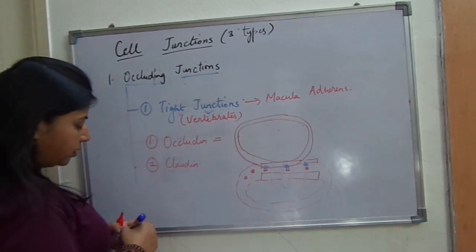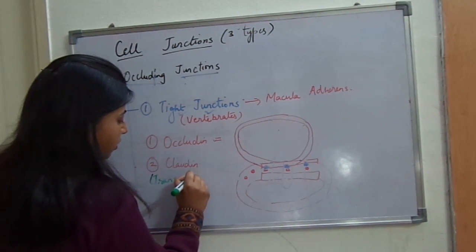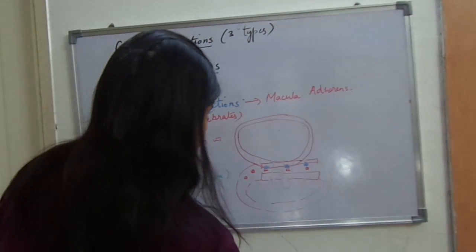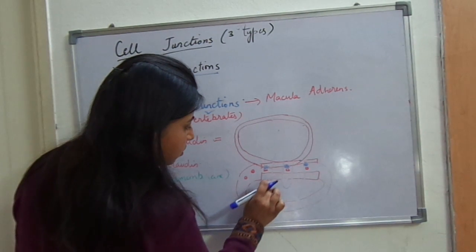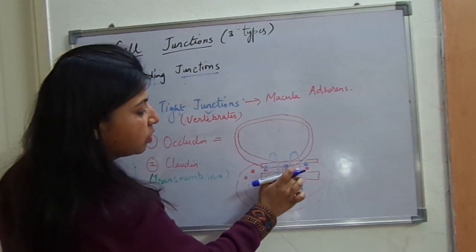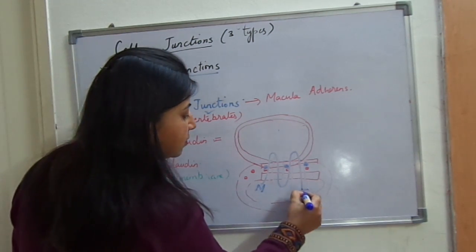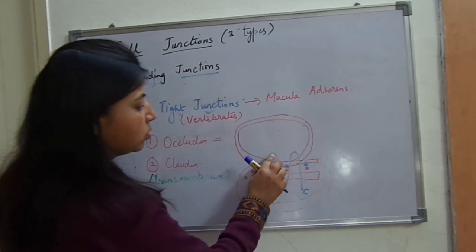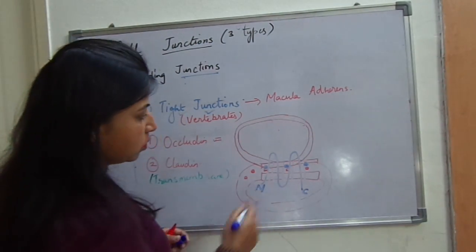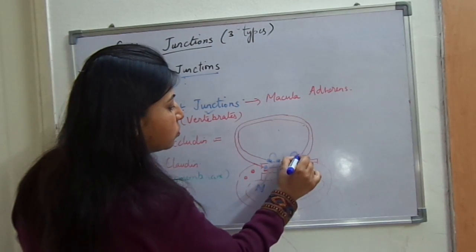The second protein is claudin, which is a transmembrane protein. Claudin spans through the membrane four times. The N-terminal is present to the inside of the cell and the C-terminal is also present to the inside of the cell. On the outer side, there are two loops which bind to the peripheral proteins on the other side of the membrane.